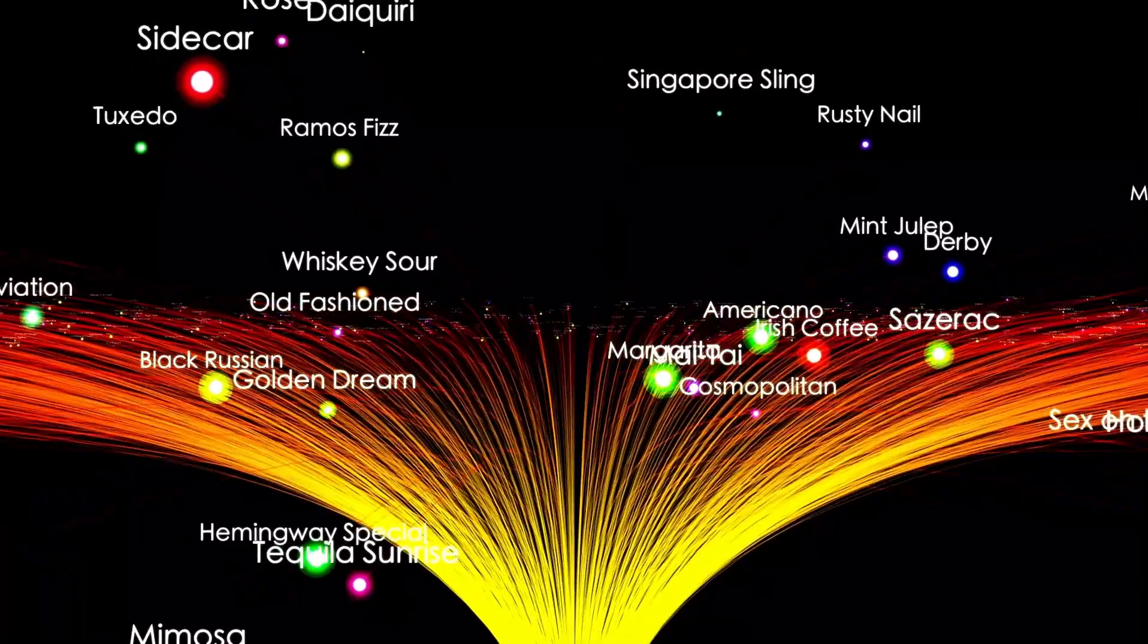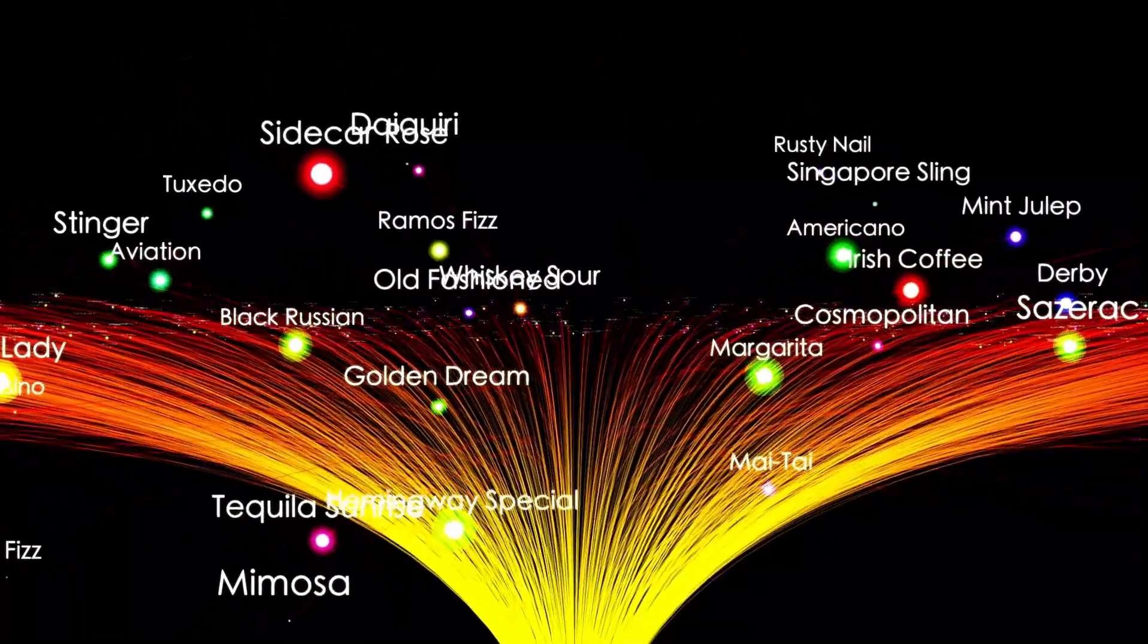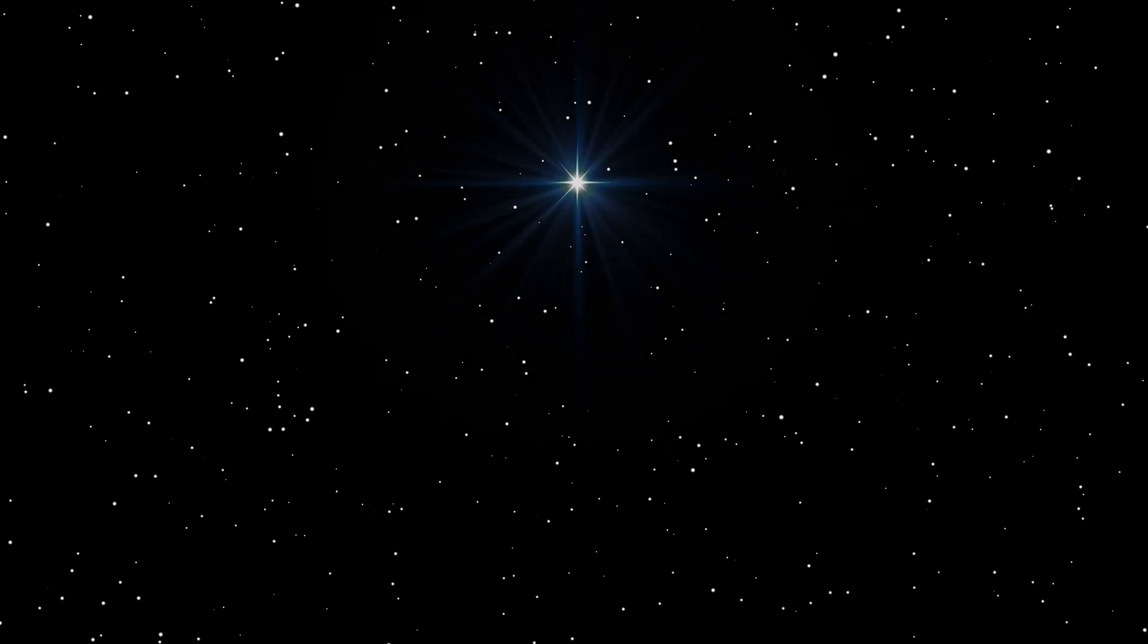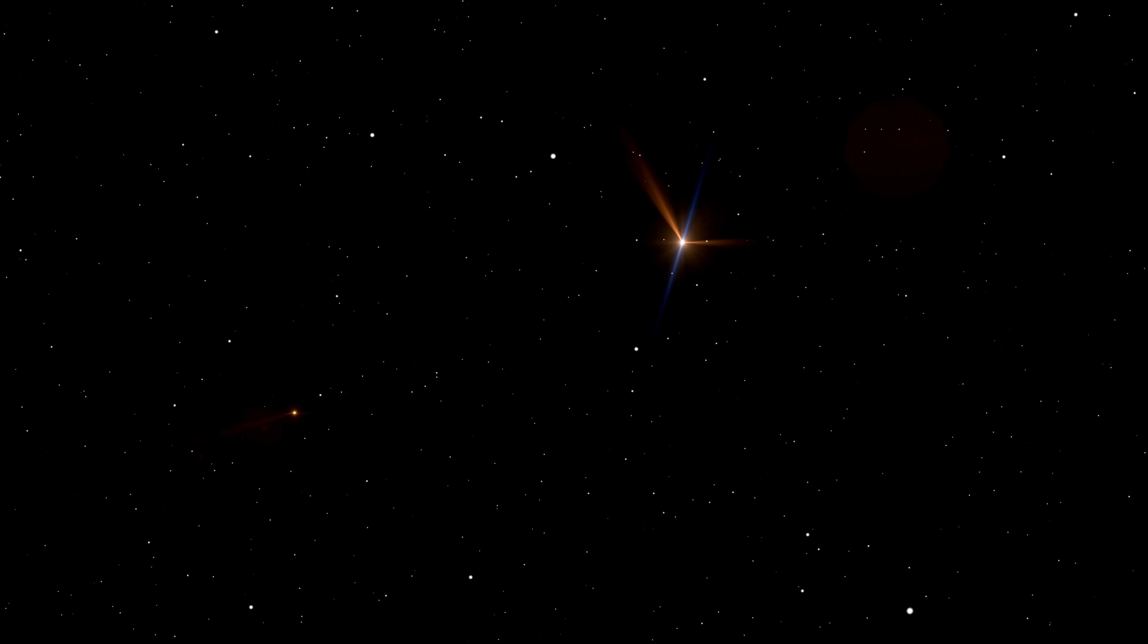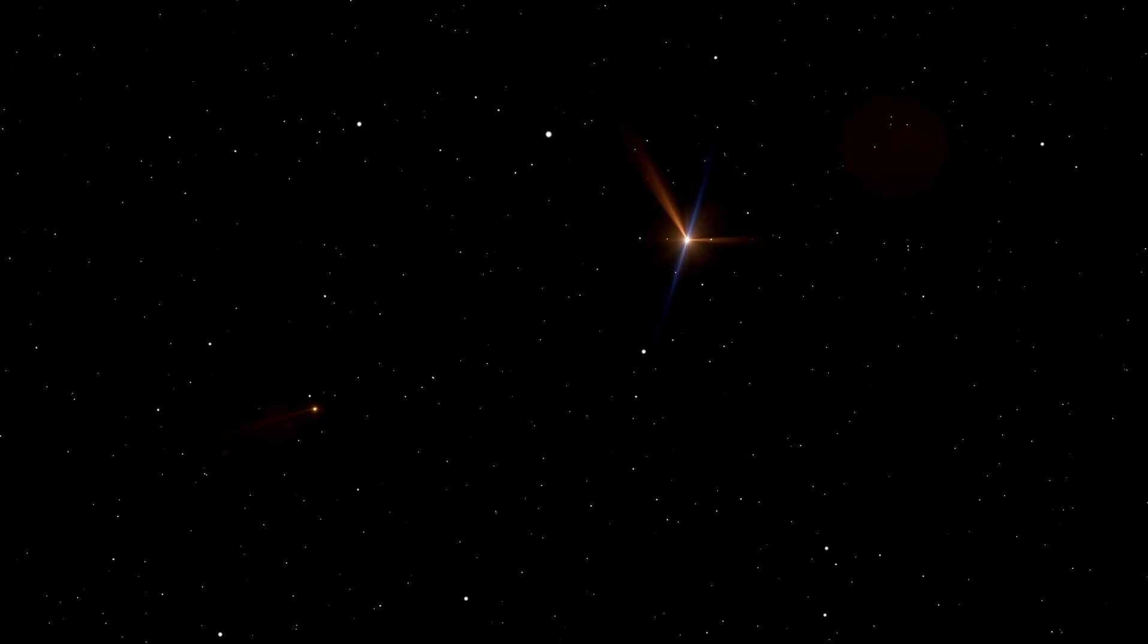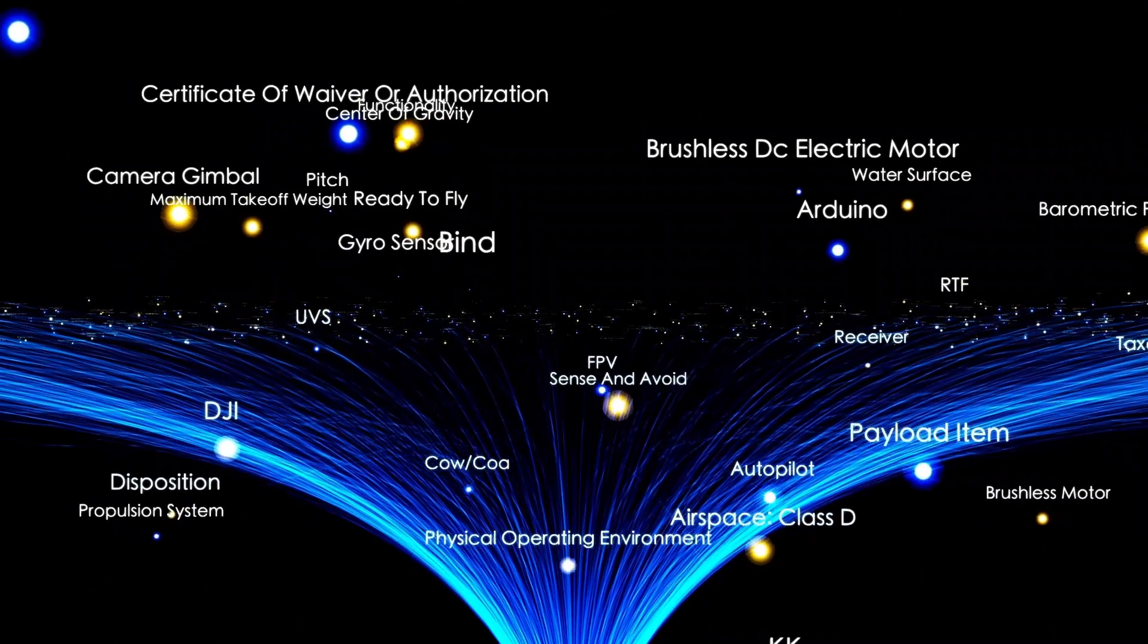Another difference between the three stars is their brightness. Betelgeuse is one of the brightest stars in the night sky, with an apparent magnitude that varies between 0.0 and 1.3. Antares fluctuates in the same general range too, but can get slightly brighter at times. Mu Cephei is much brighter though, with an apparent magnitude that varies between 3.4 and 5.1.